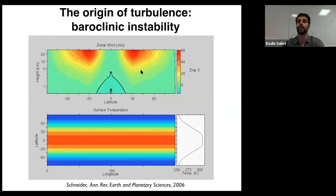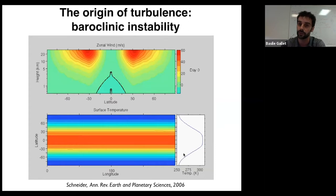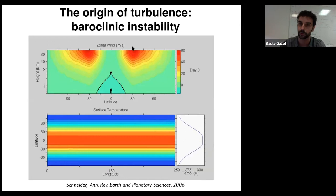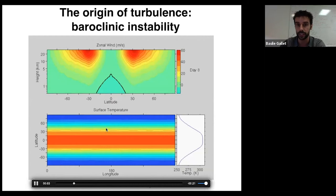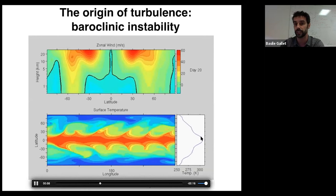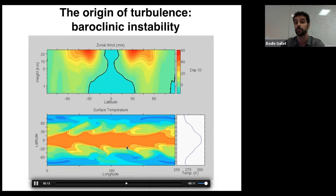Here is an animation of that using a simple atmospheric model. You can see the surface temperature as a function of longitude and latitude — the equator is warm and the poles are cold, with the zonally averaged temperature profile shown. In thermal wind balance with the meridional gradient is a zonal wind, sheared in the vertical direction. That's a valid solution, but it's unstable. You can see a wave develop and then turbulence follows, and the temperature difference between equator and poles is reduced as that turbulence transports heat.